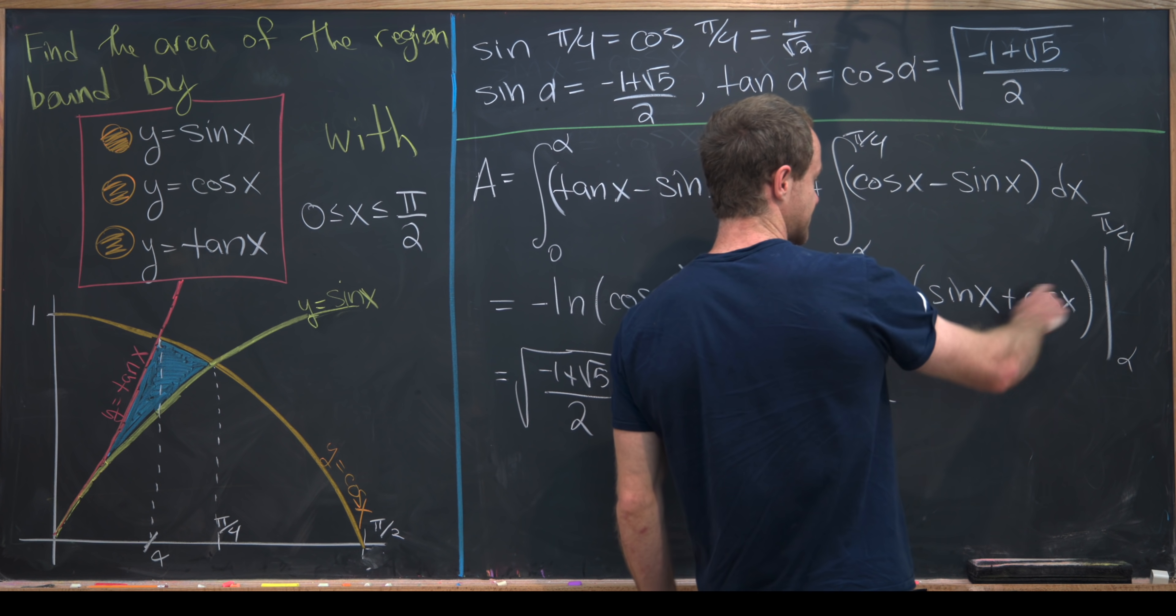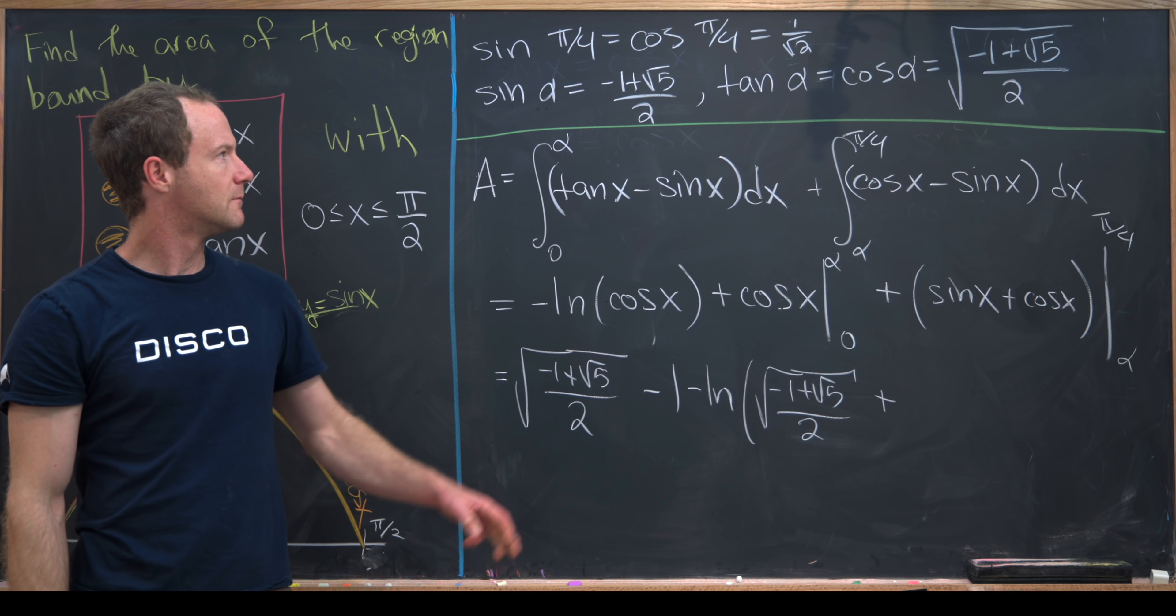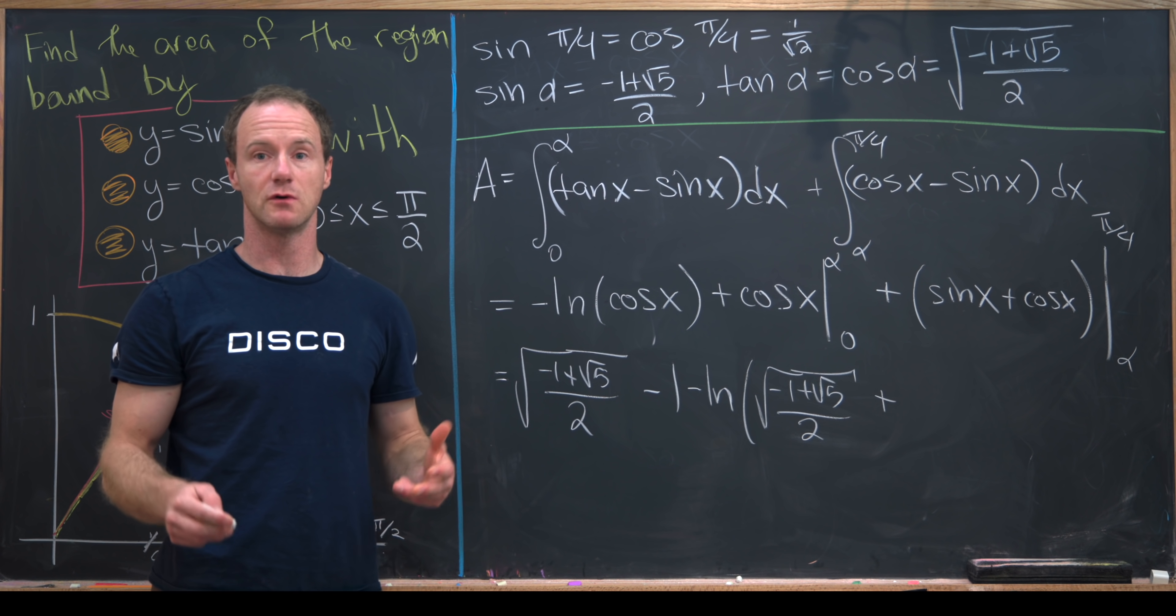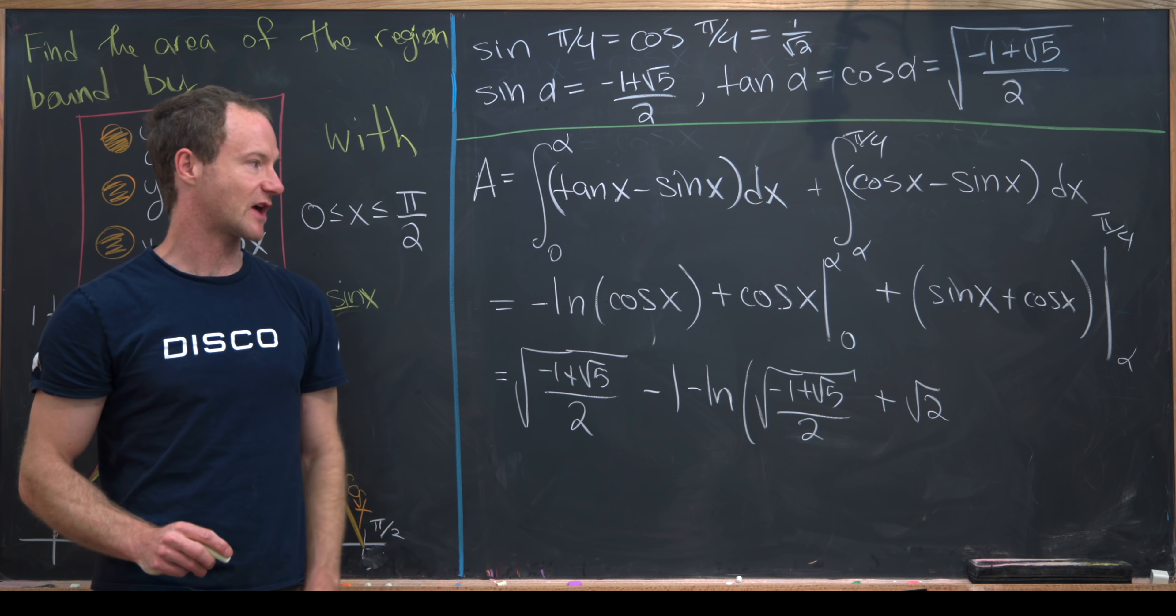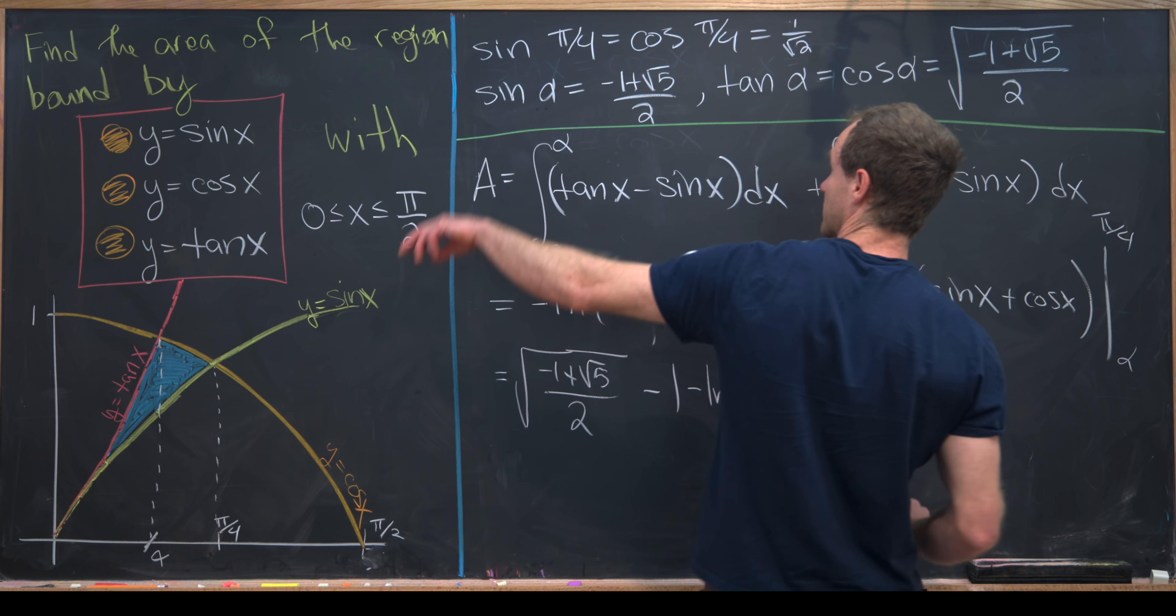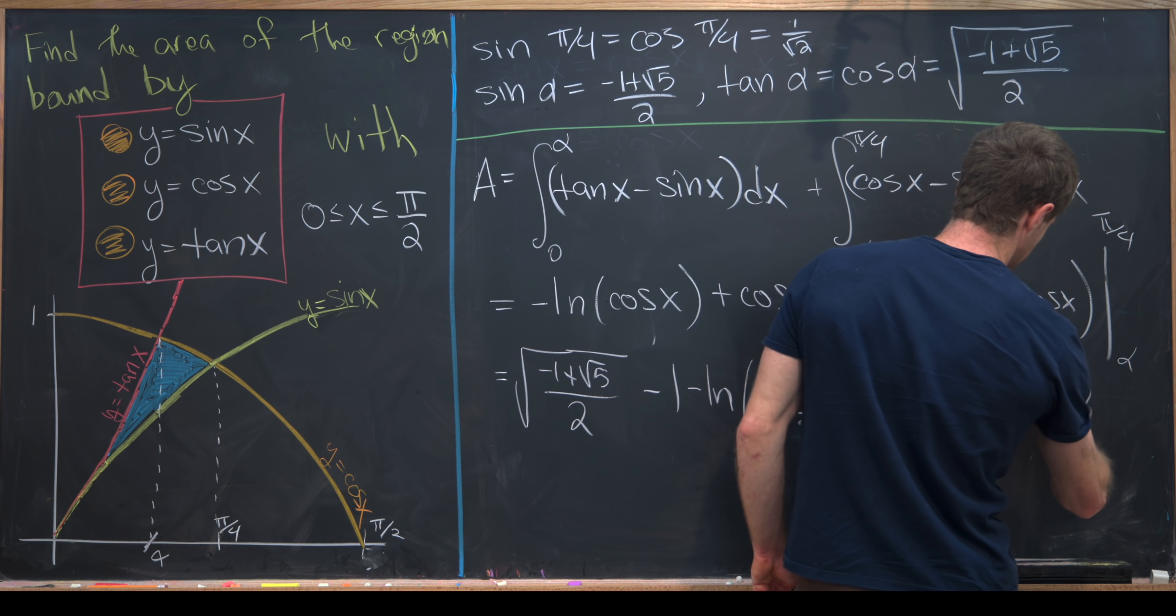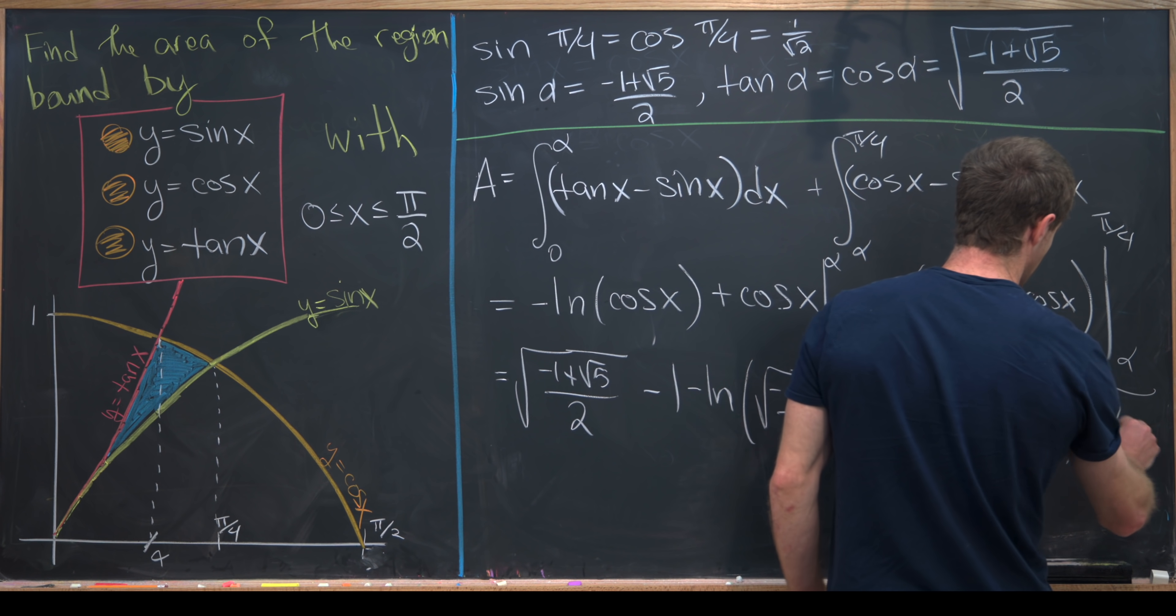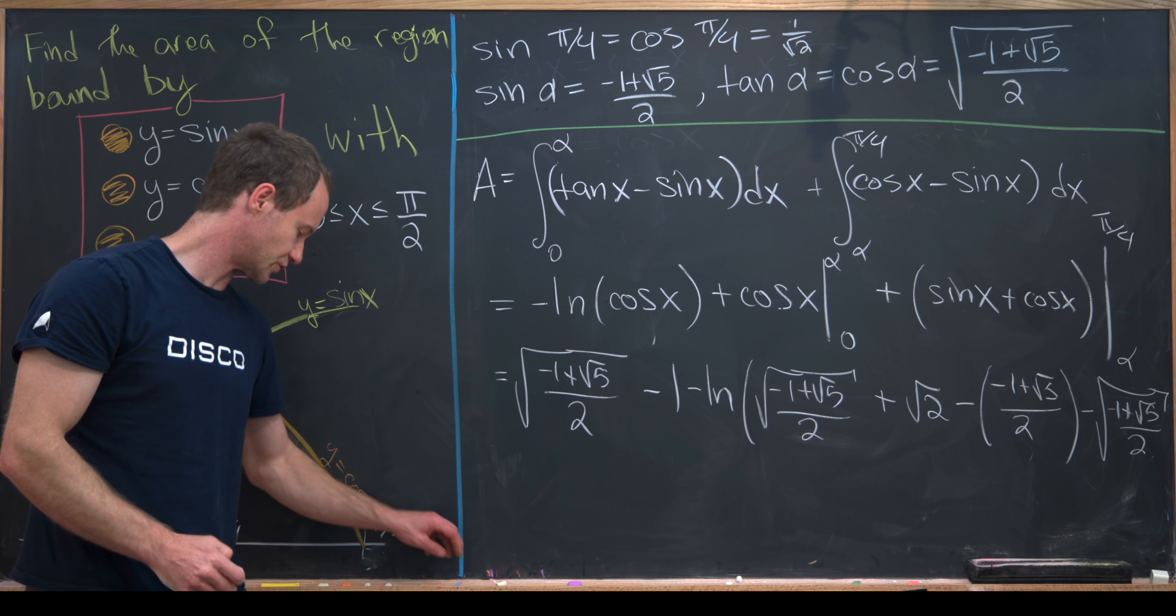We'll have plus each of these guys evaluated at pi over 4, but that's going to be 1 over root 2 plus 1 over root 2, which is 2 over root 2, which is the square root of 2. Then we'll have to subtract off what happens when we plug in alpha. So if we plug in alpha to sine, we get this. So that's minus minus 1 plus root 5 over 2, and then minus the square root of that as well.